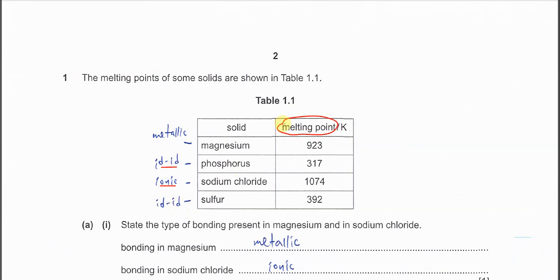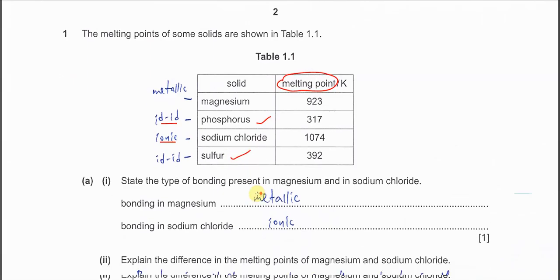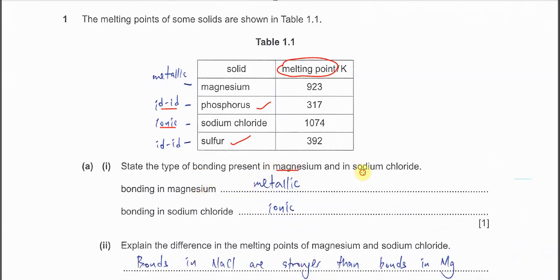When considering melting point or boiling points, we normally refer to the intermolecular force for molecules like phosphorus and sulfur. Part one asks us to state the type of bond present in magnesium and in sodium chloride. This is quite easy because each involves one type: magnesium has metallic bonding and sodium chloride has ionic bonding.